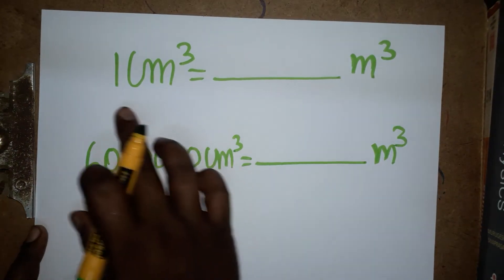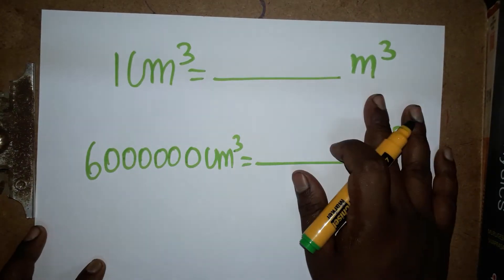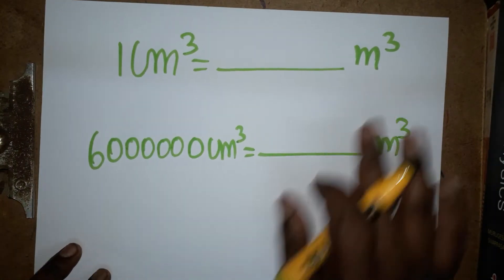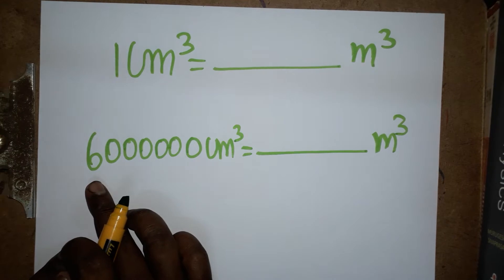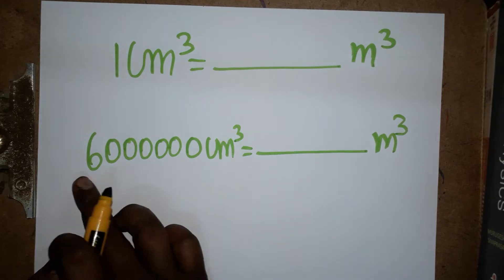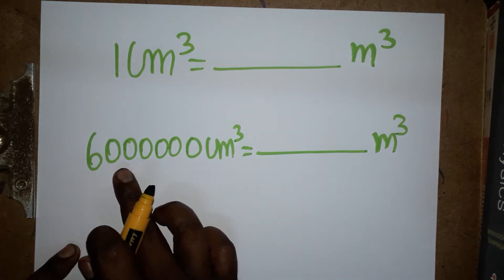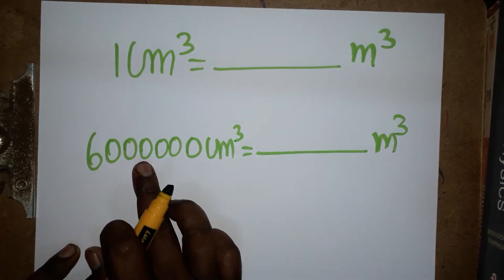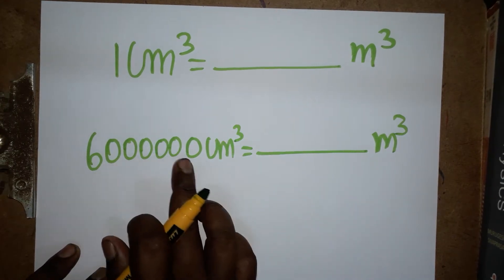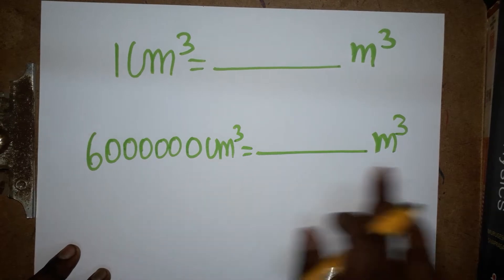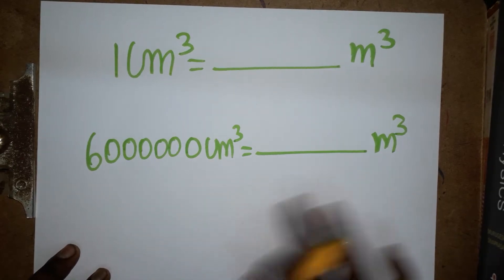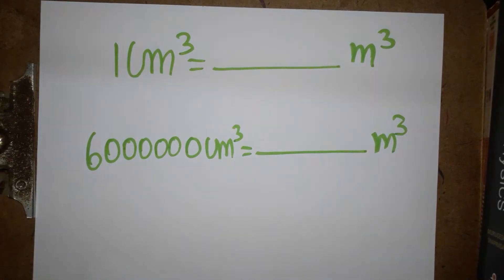Hello students, today we are going to learn: 1 centimeter cube is equal to how many meter cubes. We are also going to find what 1,000,000 centimeter cube equals in meter cube. This is a unit conversion we are going to learn. If you like my channel, please subscribe.